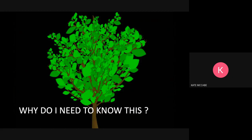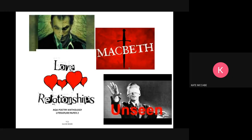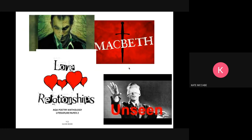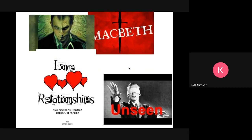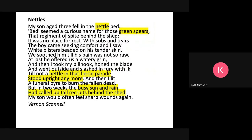So why do you need to know this? Well, the texts we are using in Key Stage 4 all have nature as their main themes. We have Macbeth, we have Jekyll and Hyde, we have love and relationships, and we have unseen poetry. Here is a good example of an unseen poem that uses nature. The poem is called 'Nettles,' and although nettles are a type of plant that has the power to hurt and sting you if you touch it, this poem uses the plant nettles to represent something else.